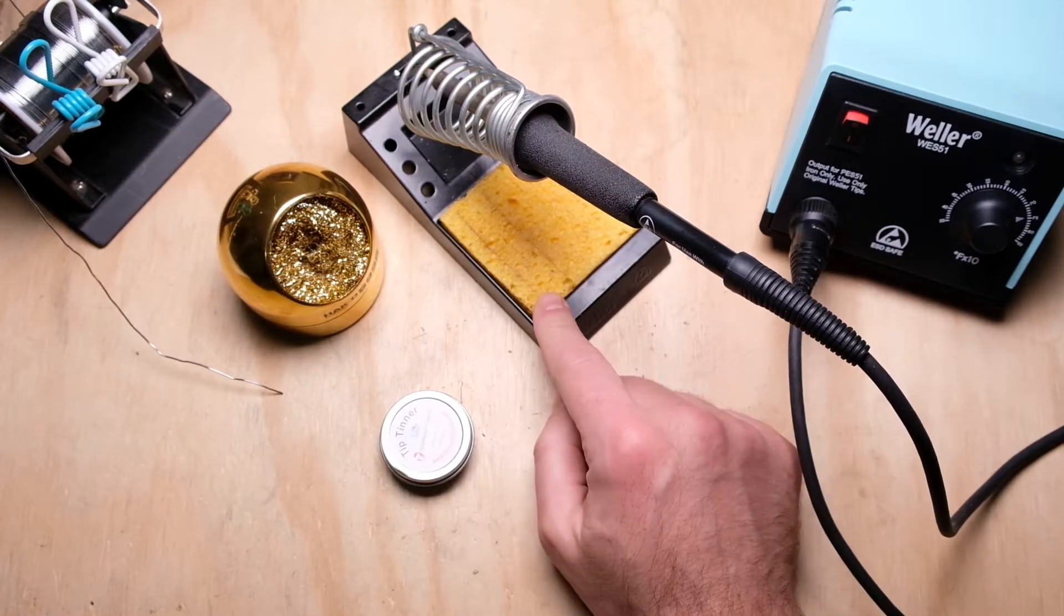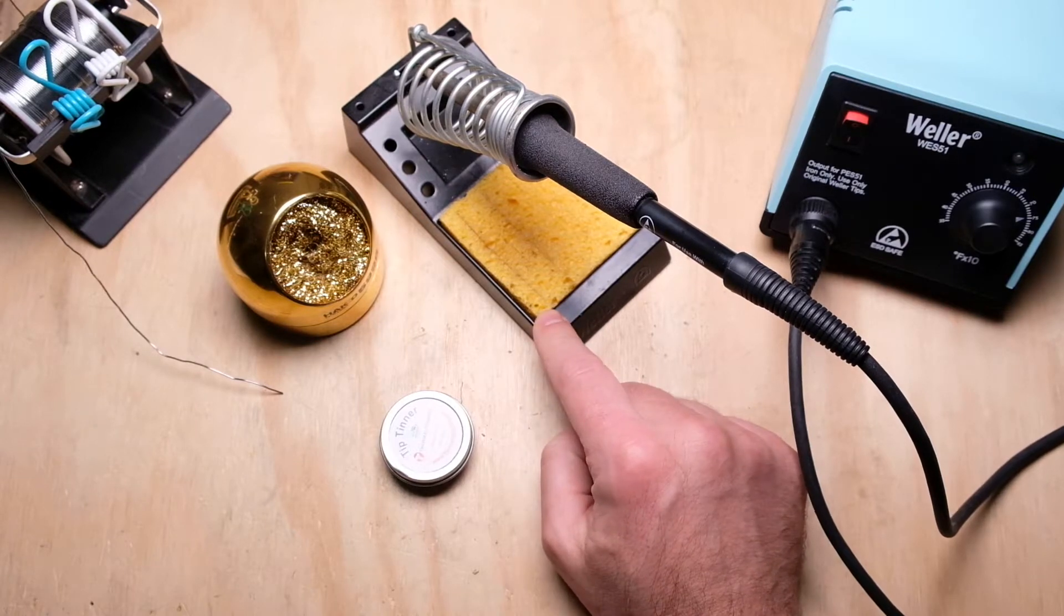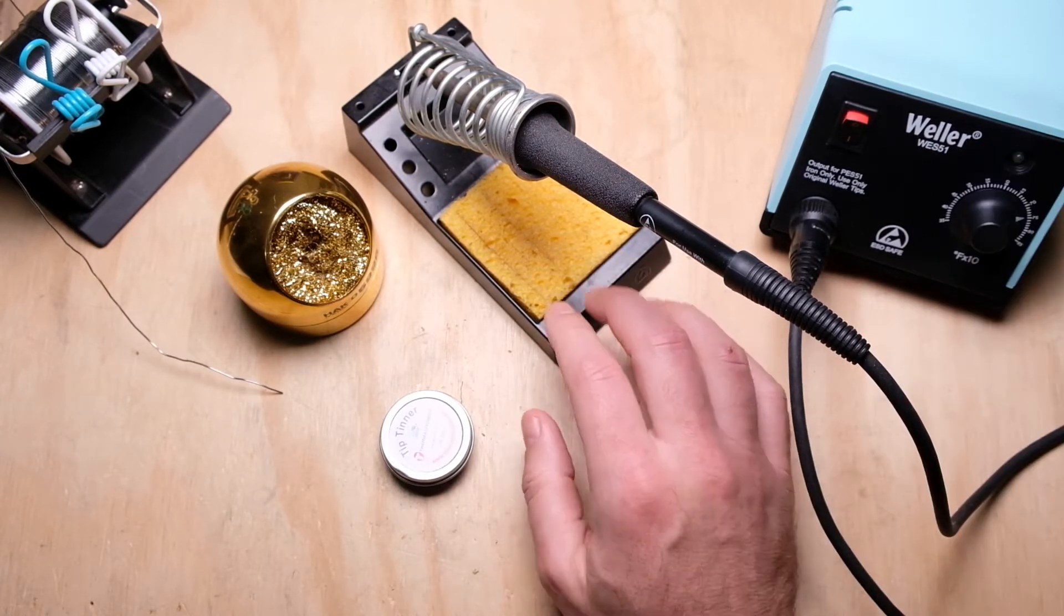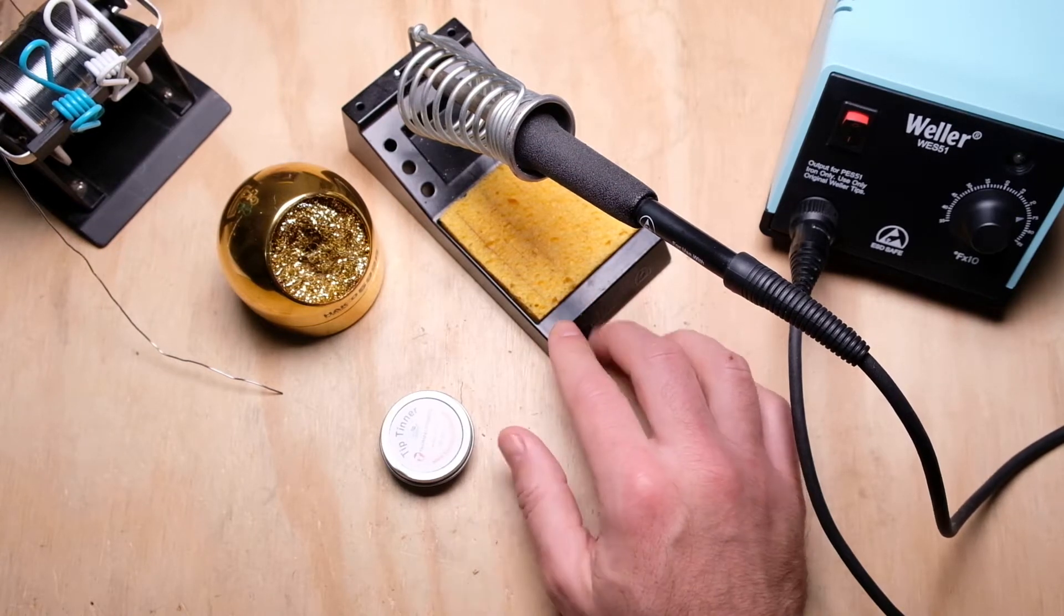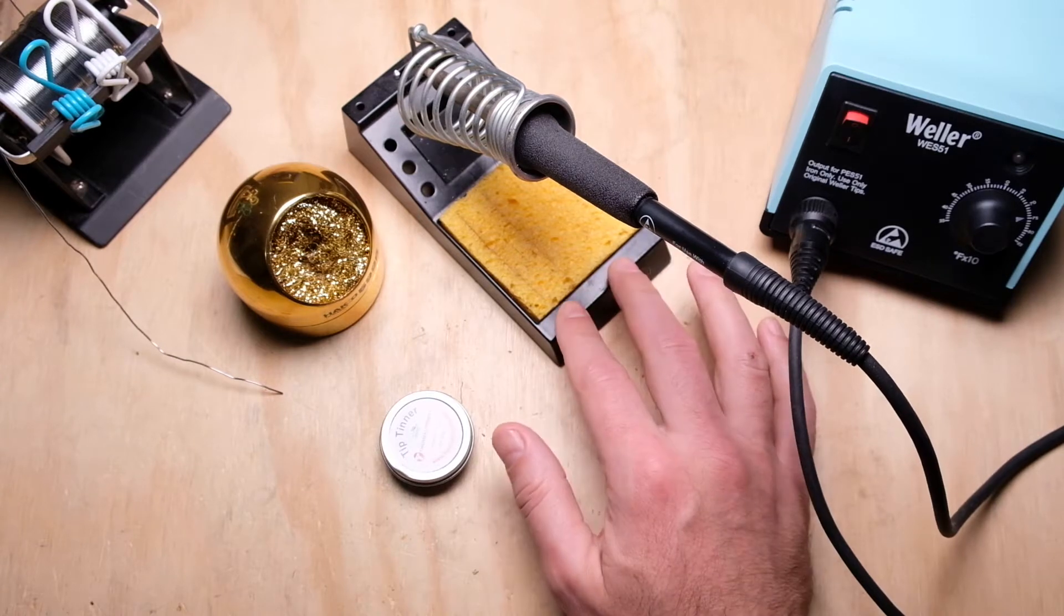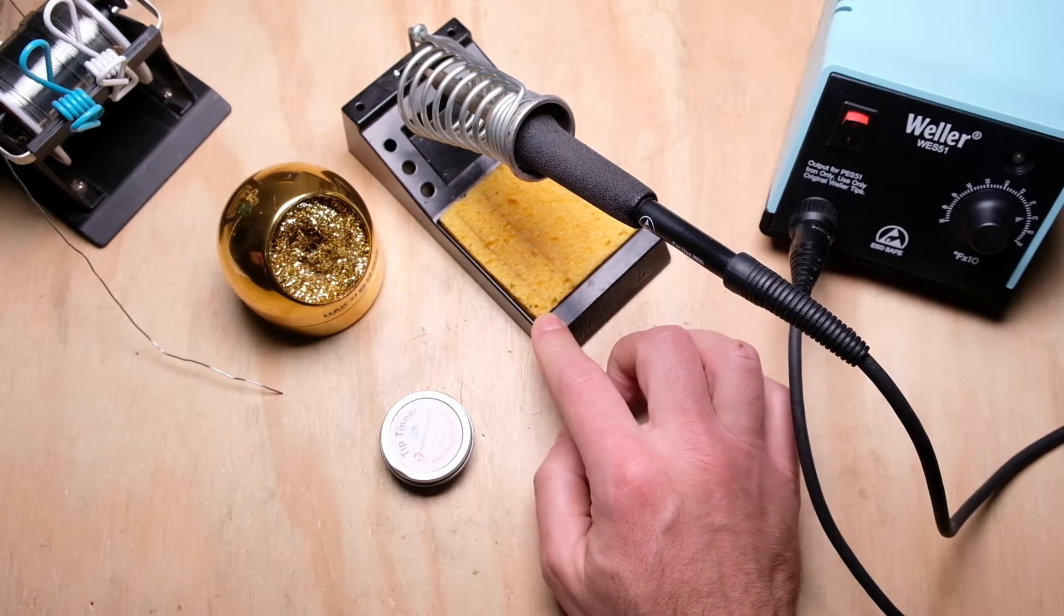You can get the replacement sponges. Like I said, you can use the standard kitchen sponges or something like that. But if you want to get the original Weller or Hakko or whatever kind of brand you have, I think they're just a little bit expensive, but I guess I'm a sucker for form factor on these. So I pay the extra money and I make sure I always get the original ones.